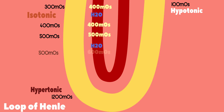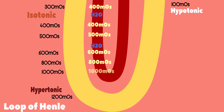This process repeats as the ultrafiltrate flows deeper and deeper, ultimately becoming approximately 1,200 milliosmoles, or hypertonic, when it reaches the bottom of the descending limb. This means that the ultrafiltrate is hypertonic to blood, and this is due to the significant amounts of water that have been reabsorbed while the solutes remain in the ultrafiltrate.